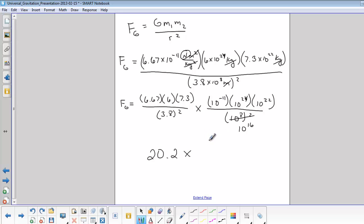And now to find the exponent, we have negative 11 plus 24 plus 22 and then we subtract anything in the denominator so minus 16. So that leaves us with 19. So it's 10 to the 19th and then remember we had newtons back from up here.